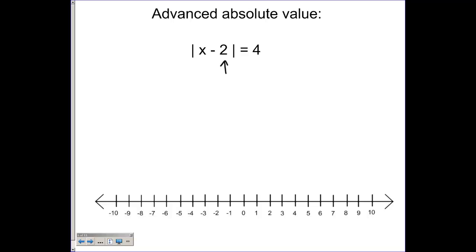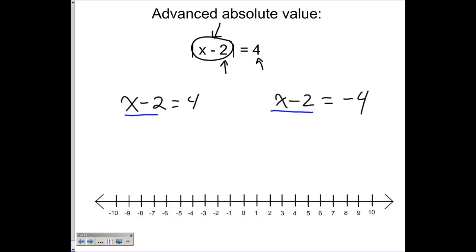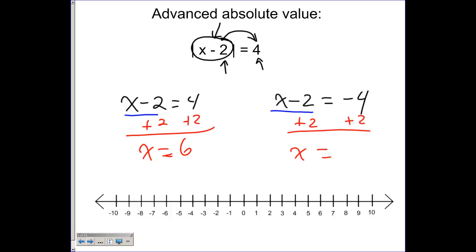Here's another one. This is our starting point — we're talking about two, and we want to know what number is four units away from that. To solve this algebraically: take what's inside, x minus two, and set it equal to four. Then write it again, x minus two, but set it equal to negative four, because whatever is inside the absolute value can be either positive or negative four. Solving the first: add two to both sides, x equals six. Solving the second: add two to both sides with negative four, x equals negative two. So the answers are x = 6 or x = -2.